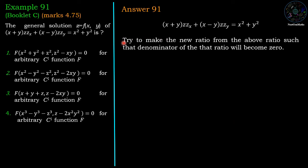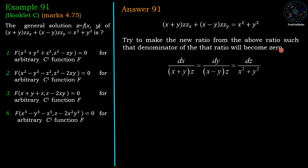Now we will try to make new ratios from the above auxiliary equation such that the denominator of each new ratio becomes 0, which will allow us to extract exact differential equations.